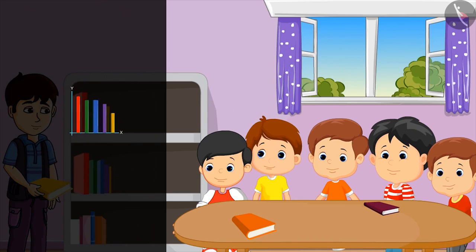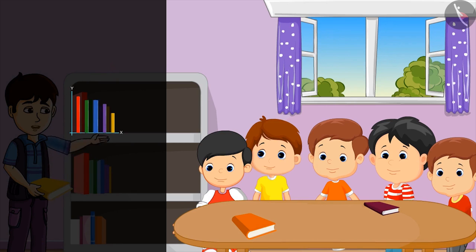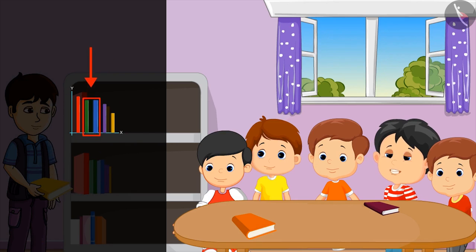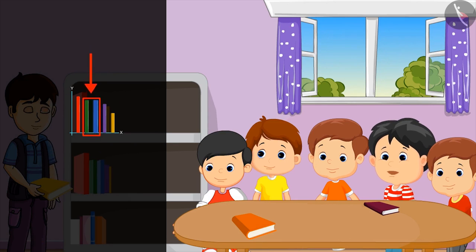The red one. Right. And the smallest one? The yellow one. Right. Do some books have the same height? Yes, the blue and green ones have the same height. Absolutely correct.